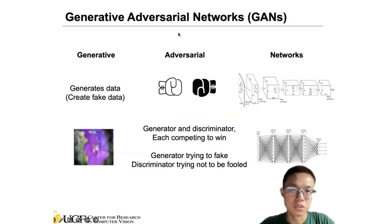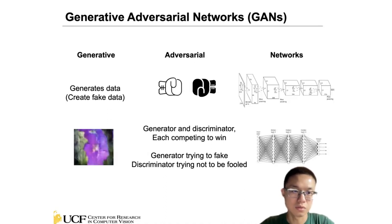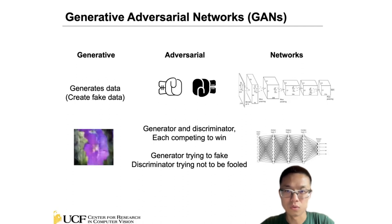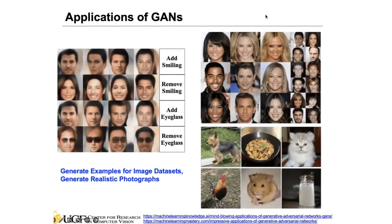Based on the name — generative adversarial network — you can think of this as a two-player game. You have a generator and a discriminator that compete with each other. The generator tries to produce fake data, while the discriminator tries to distinguish whether the input is real data or data generated by the generator. There are many applications; for example, we can generate face images.